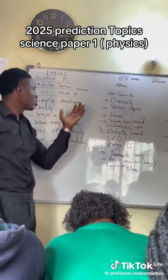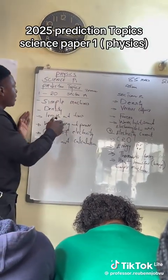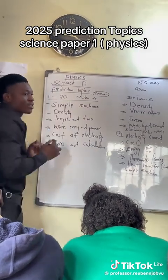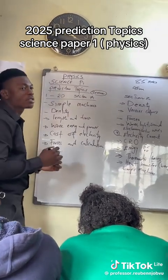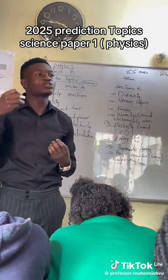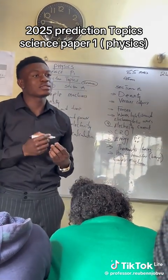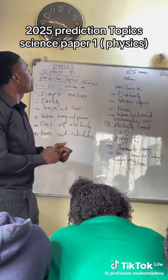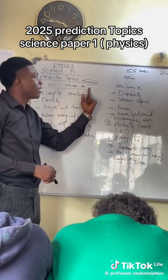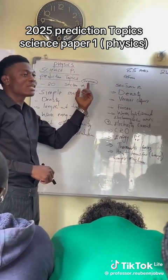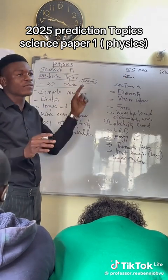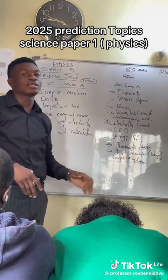Section A is where a lot of students lose marks, because they feel like it's wasting their time, so they rush or put random answers. But if you get zero in Section A, you've already lost 20 marks from 85 — leaving you with only 65. And don't think you'll get everything right in the other sections.